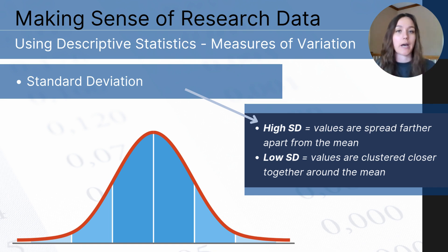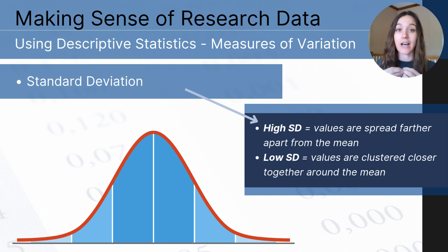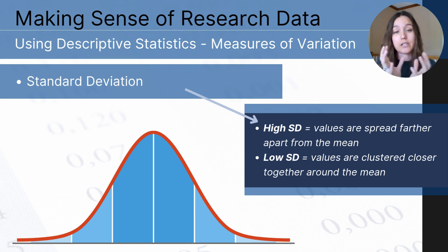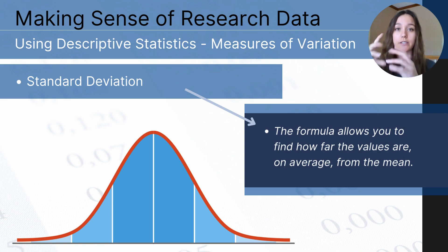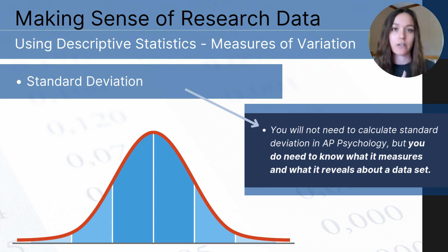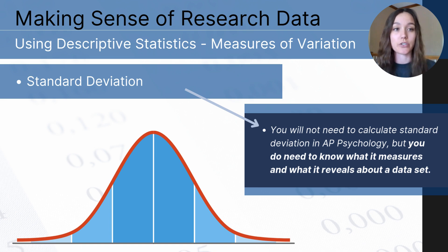If your standard deviation is low, your numbers are more closely compact to one another. For example, if two companies had the same average salary but one had a high standard deviation, that likely means the salaries there are really spread apart. A low standard deviation means salaries are closer together and more compact around the mean. The formula involves adding up the squared differences between each value and the mean, then taking the square root of that sum — but you won't need to calculate it as AP Psychology students.